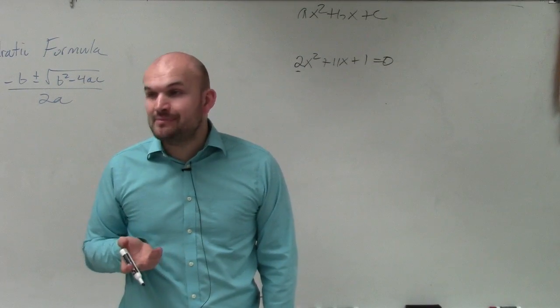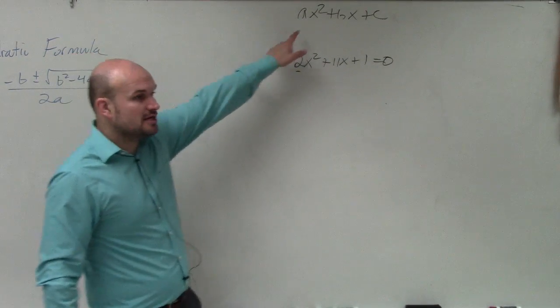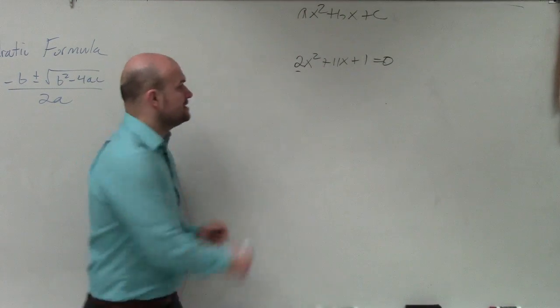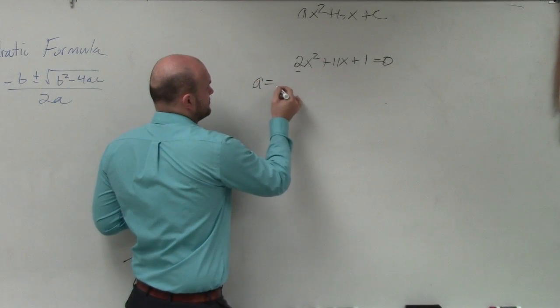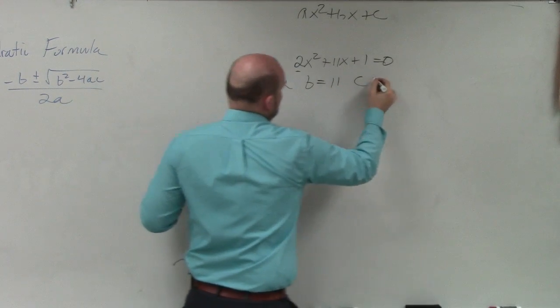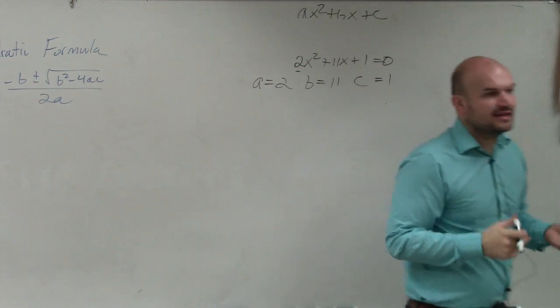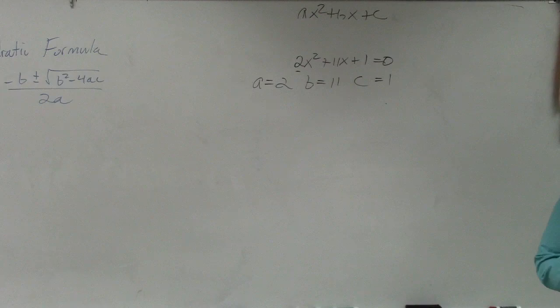First thing you want to do is identify A, B, and C. Remember, A, B, and C comes from your standard formula of your quadratic. So in this case, my A is 2, B is 11, C is 1. I thought that was the easiest part of the whole problem, right?